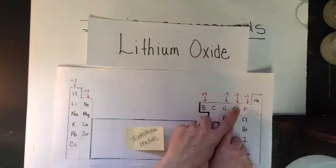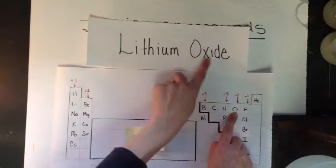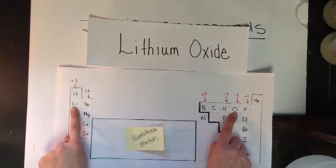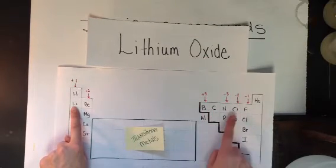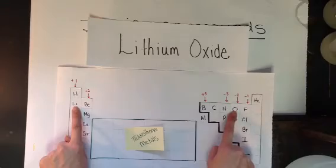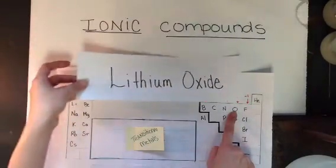Oxide is the name given when oxygen turns into an ion, which we'll talk about more later. So if you notice, here's the staircase. Lithium is a metal. Oxygen is a non-metal. We have an ionic compound.